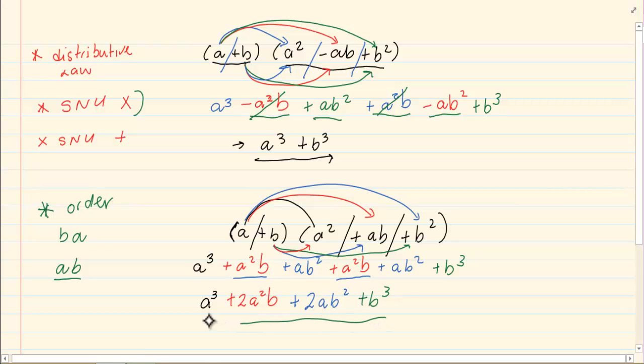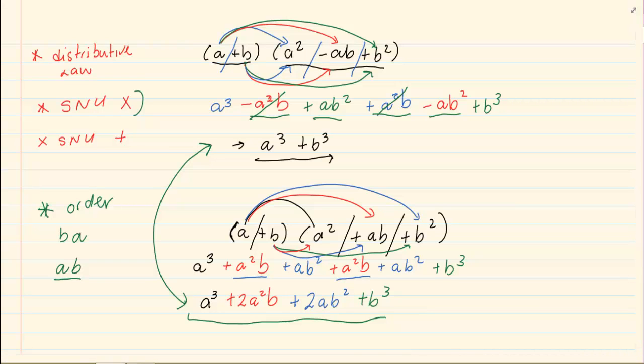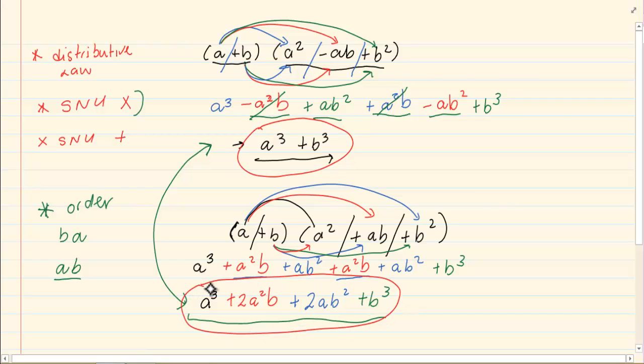So, what you need to notice is that when you are doing the distributive law for trinomials with binomials, the answers do not need to have many terms. Sometimes it can be only two terms, sometimes it can be four terms. As long as you use the distributive law and then you use your signs, numbers and unknowns with multiplication, then your signs, numbers and unknowns with addition, you will be able to group them accordingly. Thank you for watching this video.